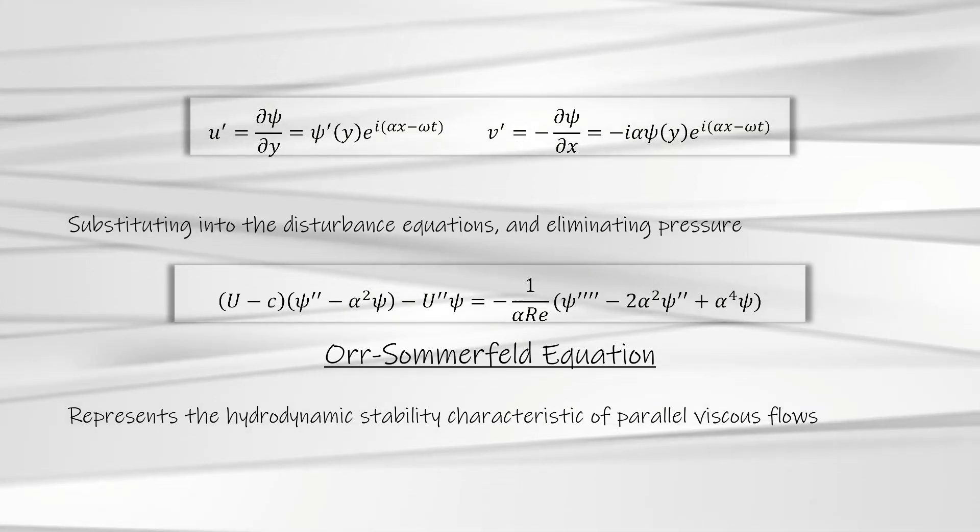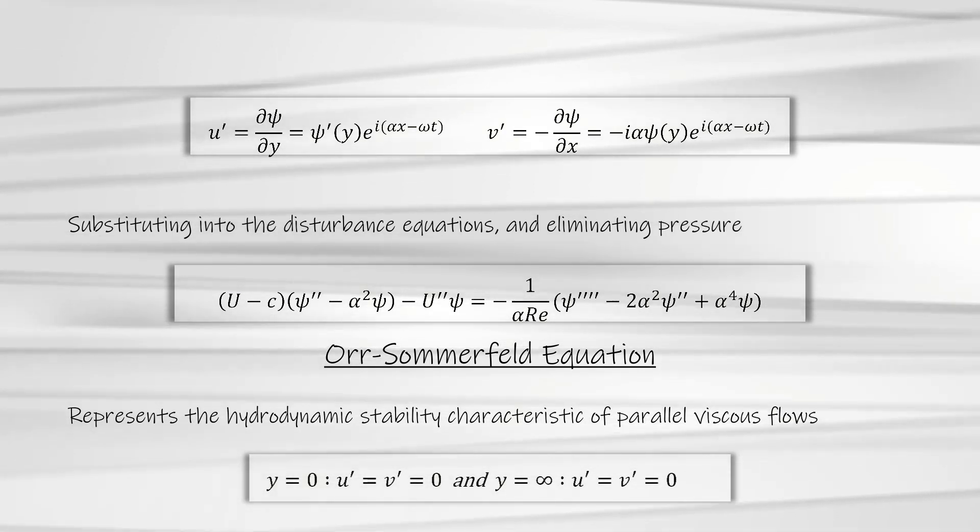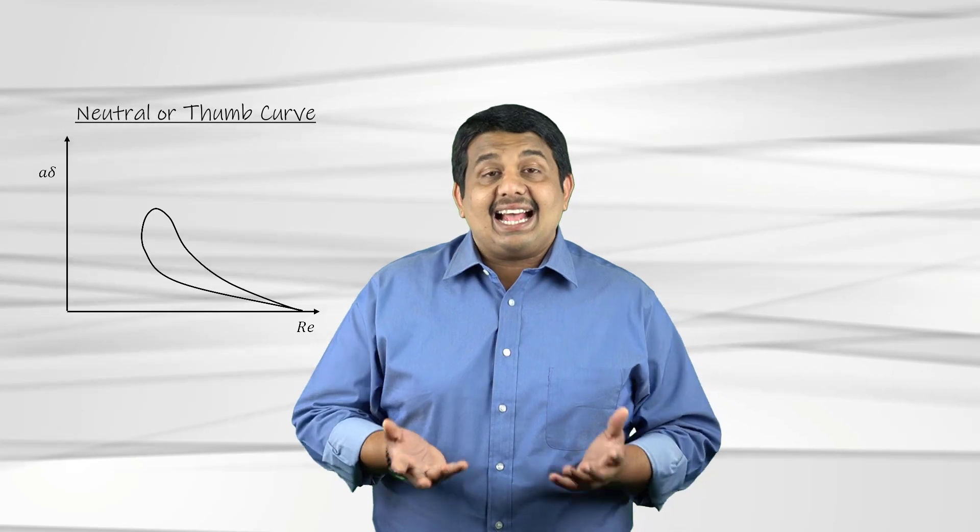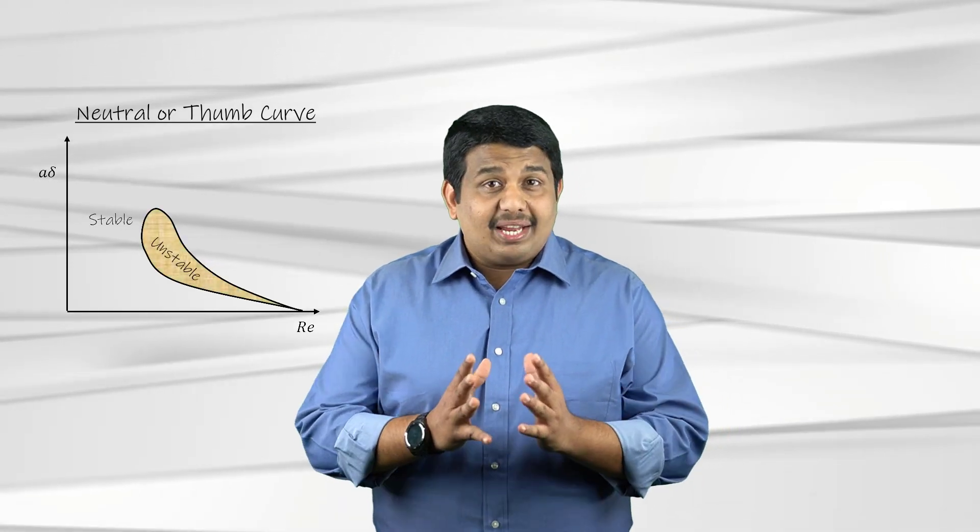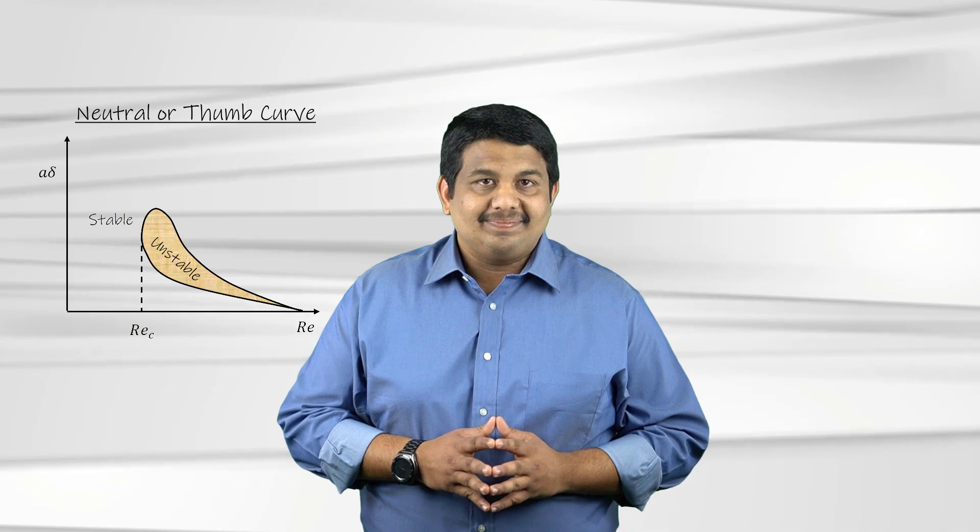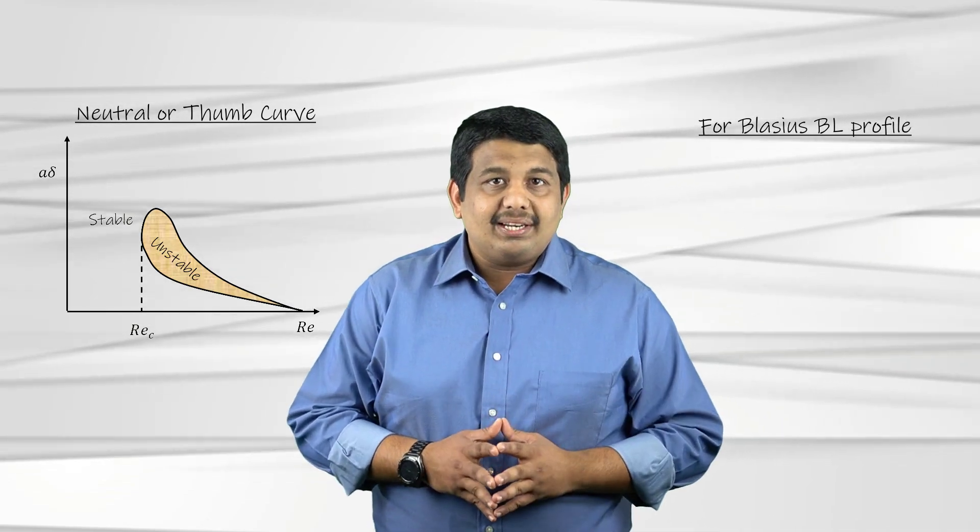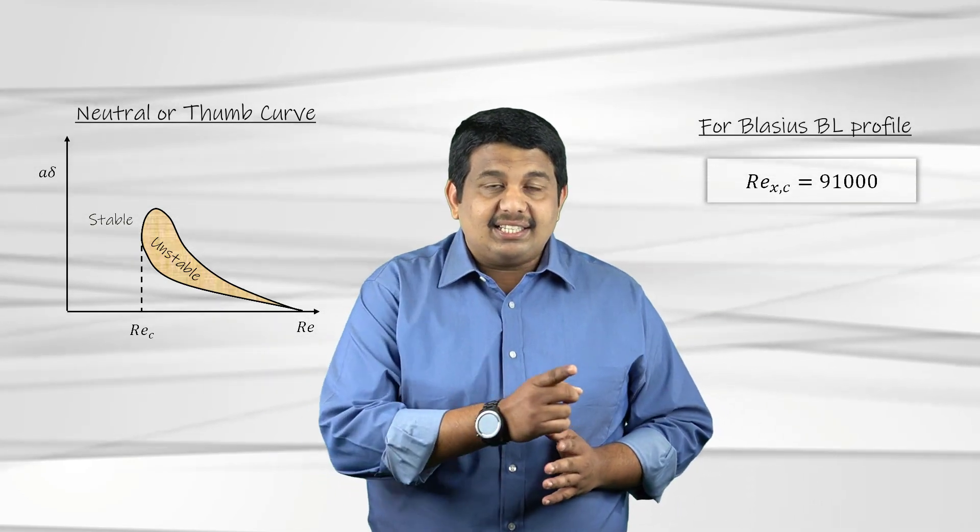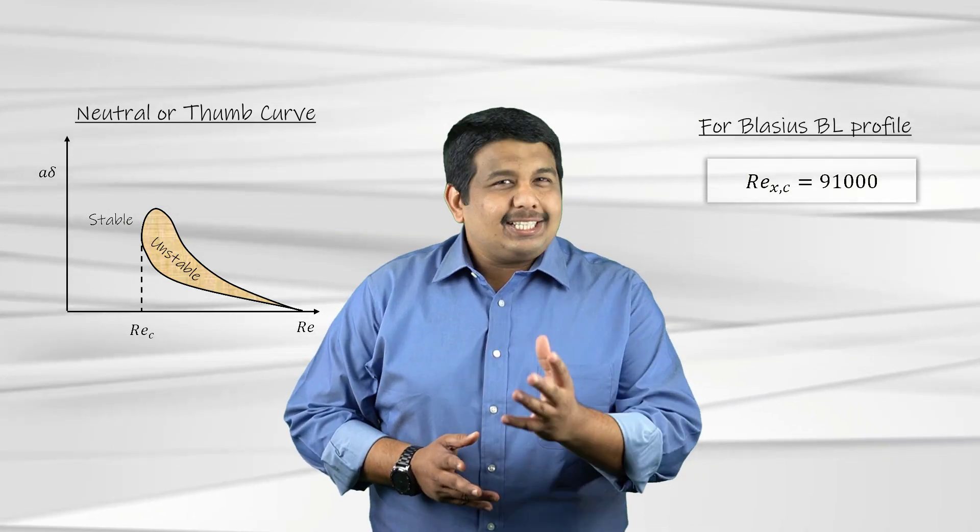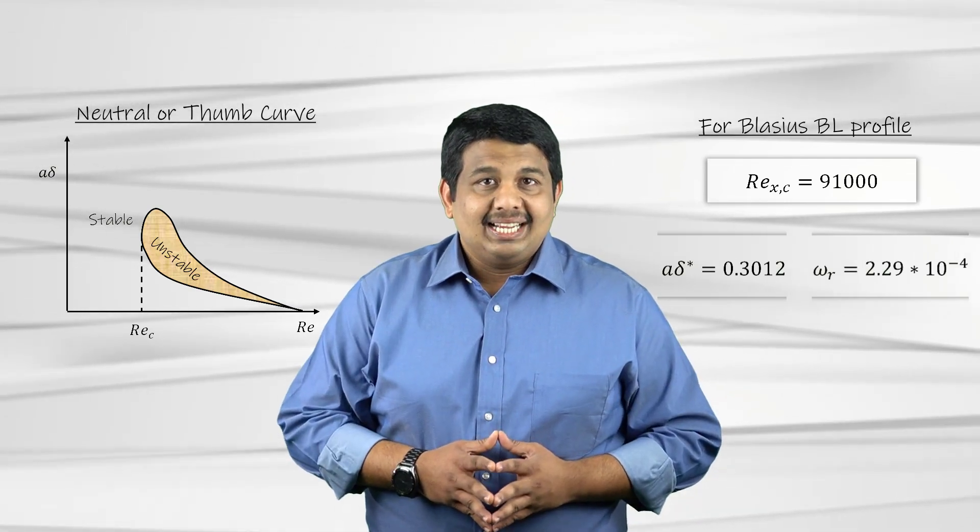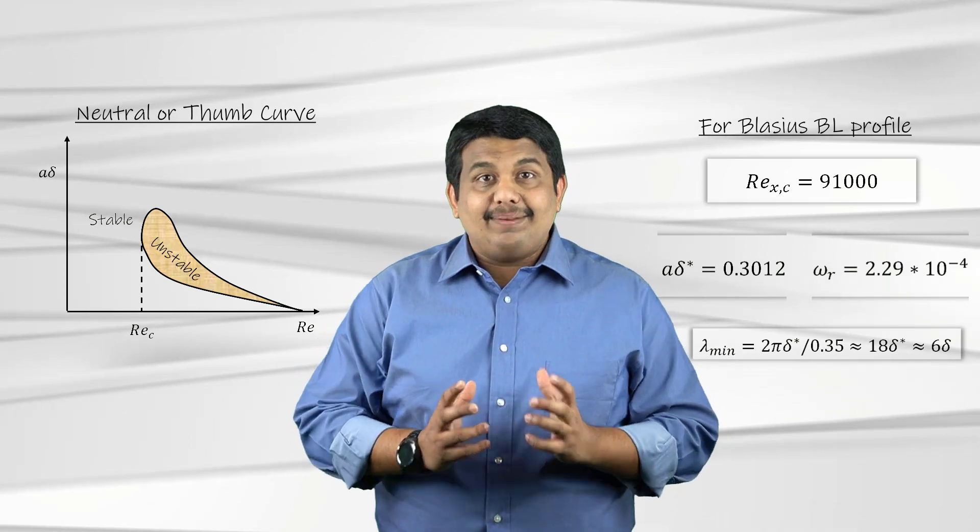This equation represents an eigenvalue flow problem with the following boundary conditions. The results obtained from solving the equation can be visualized in the form of curves that are referred to as the Neutral Stability Curves or more commonly as the Thumb Curves. The region inside the Thumb represents conditions where the disturbances are amplified. The lower limit of the Reynolds number at which the disturbances start amplifying is called the Critical Reynolds number. For a Blasius boundary layer profile, the Critical Reynolds number is about 91,000 based on the axial distance from the leading edge of the plate. The corresponding wave parameters from this Reynolds number are shown here.